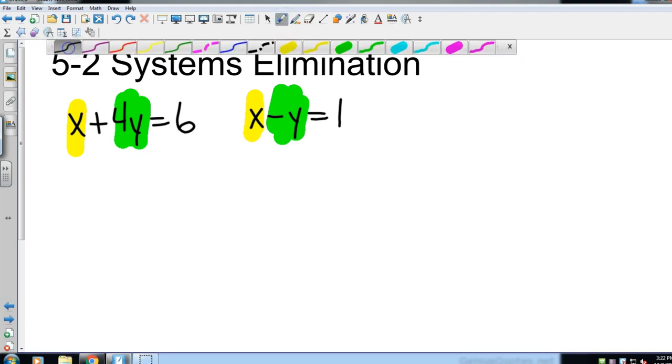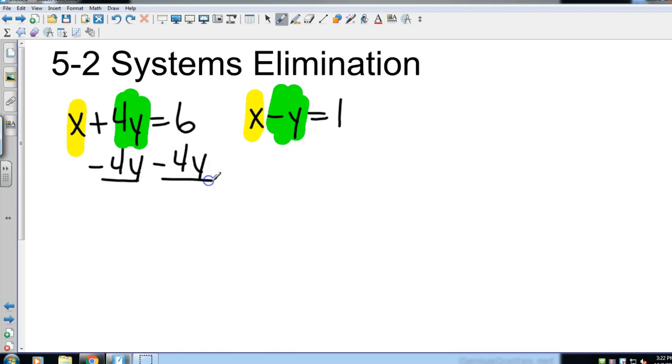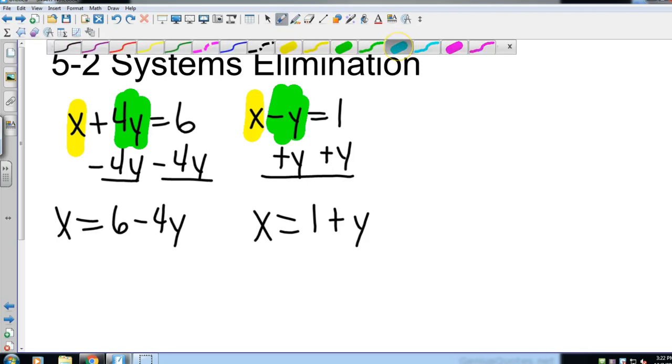So let's take a look at getting each of those with x by itself. If I want to get x by itself in the first one, I'm going to subtract 4y to the other side, and so now I have x equals 6 minus 4y. And then over here I'm going to add y to both sides, so that gives me x equals 1 plus y.